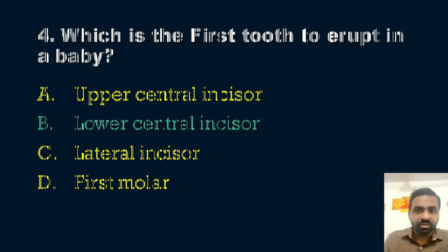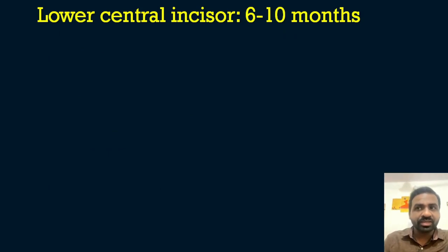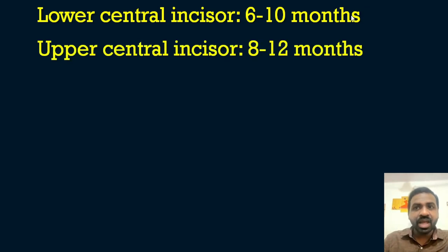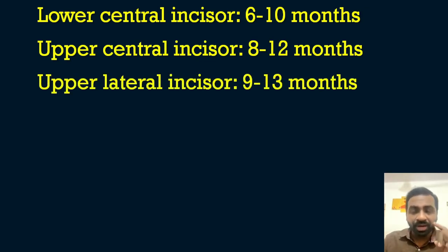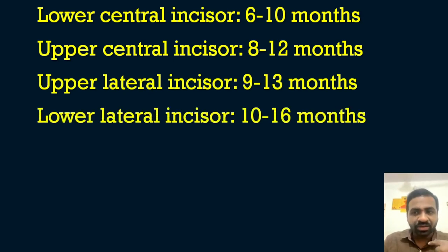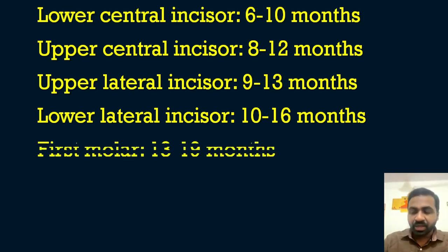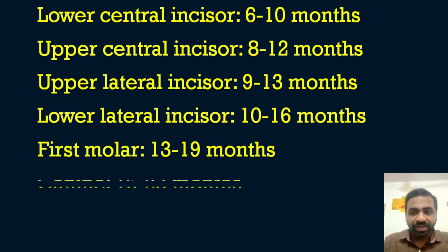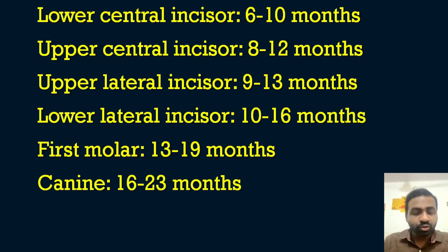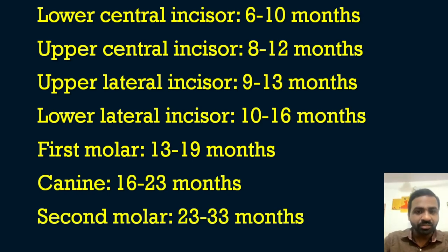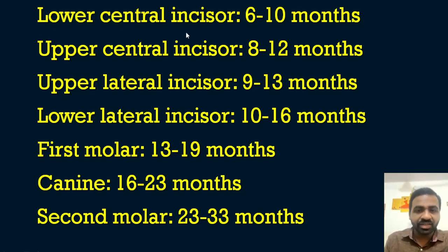The answer is option B — lower central incisor, erupting at around 6 to 10 months. Then comes the upper central incisor at 8 to 12 months, upper lateral incisor at 9 to 13 months, lower lateral incisor at 10 to 16 months, first molar at 13 to 19 months, canine at 16 to 23 months, and second molar at 23 to 33 months.